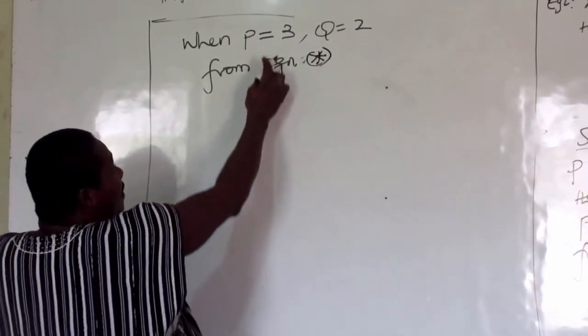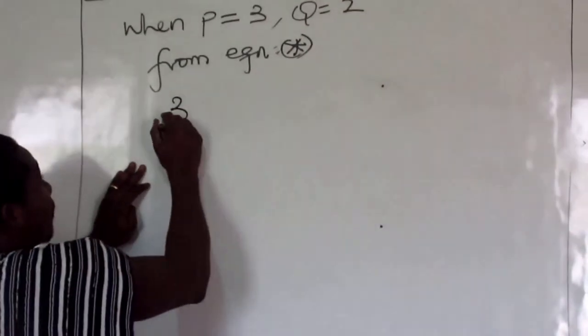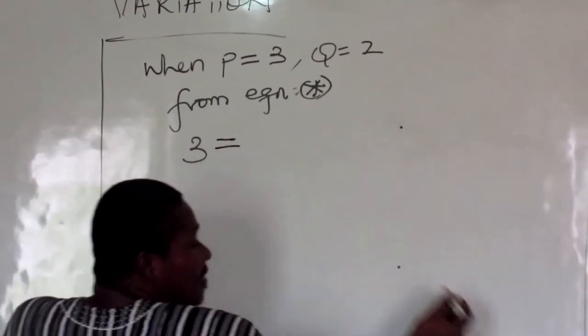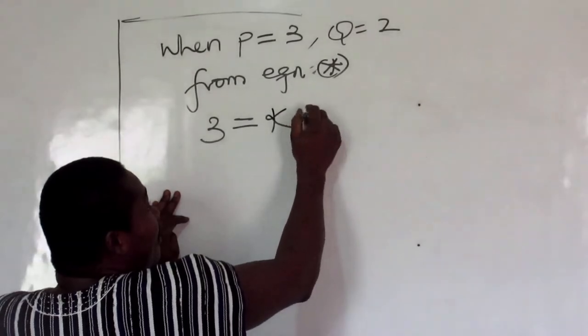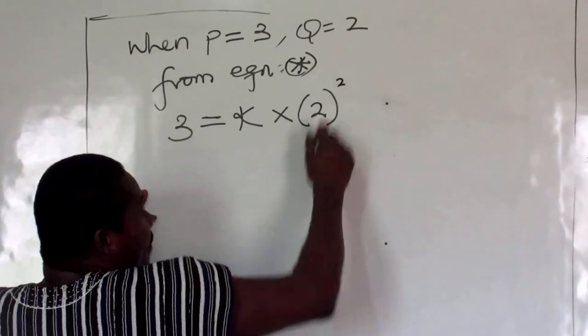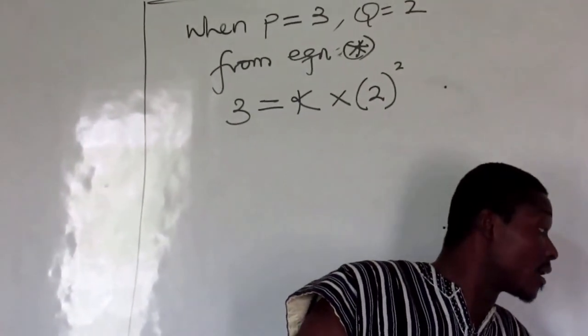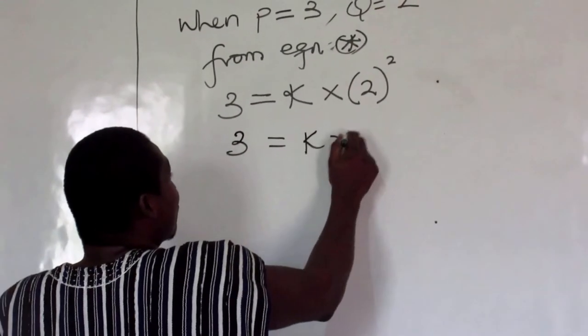So when P is 3 and Q is 2, so from the equation there, from equation star, that's available P. So whenever you see P, you're putting 3, that is equal to and this k, your constant, times Q. Q here happens to be 2, all squared. So that is exactly the same thing that you are seeing here.